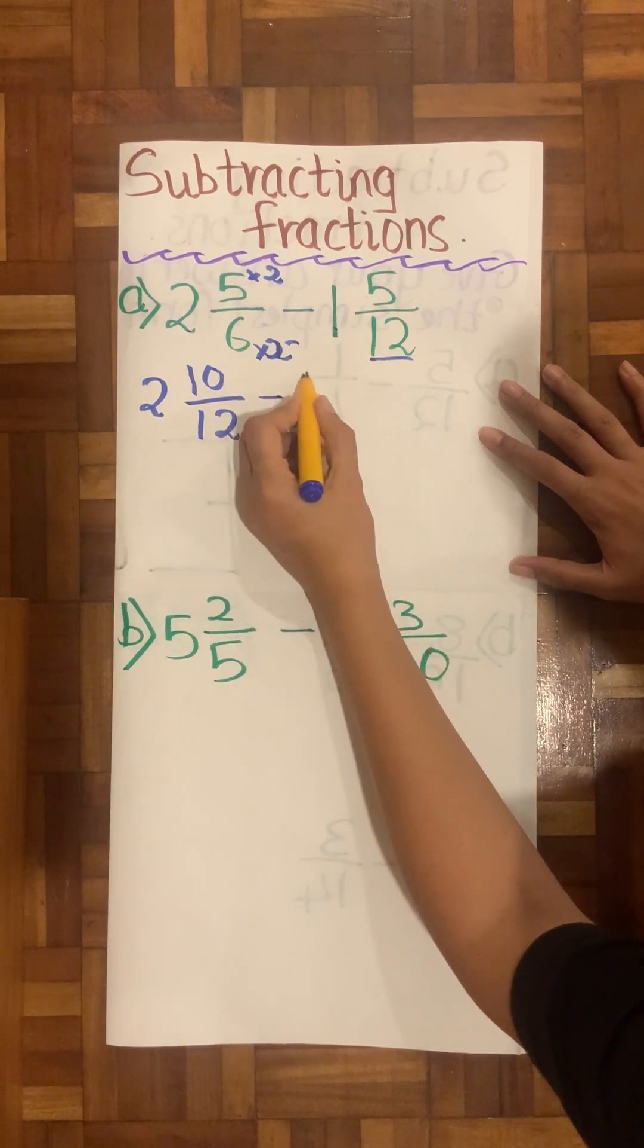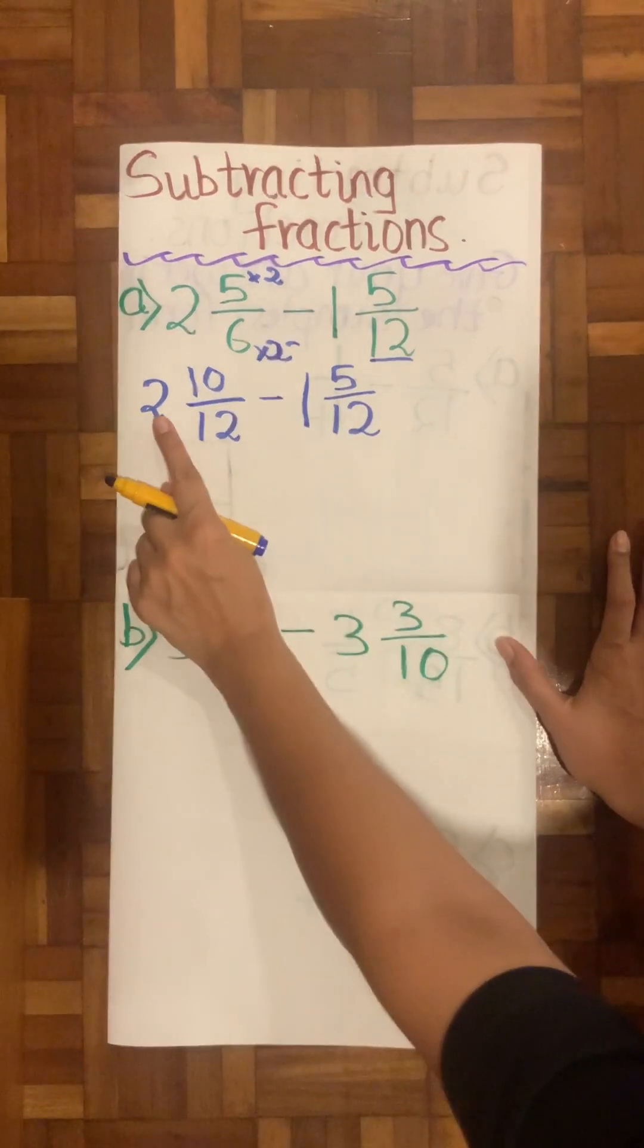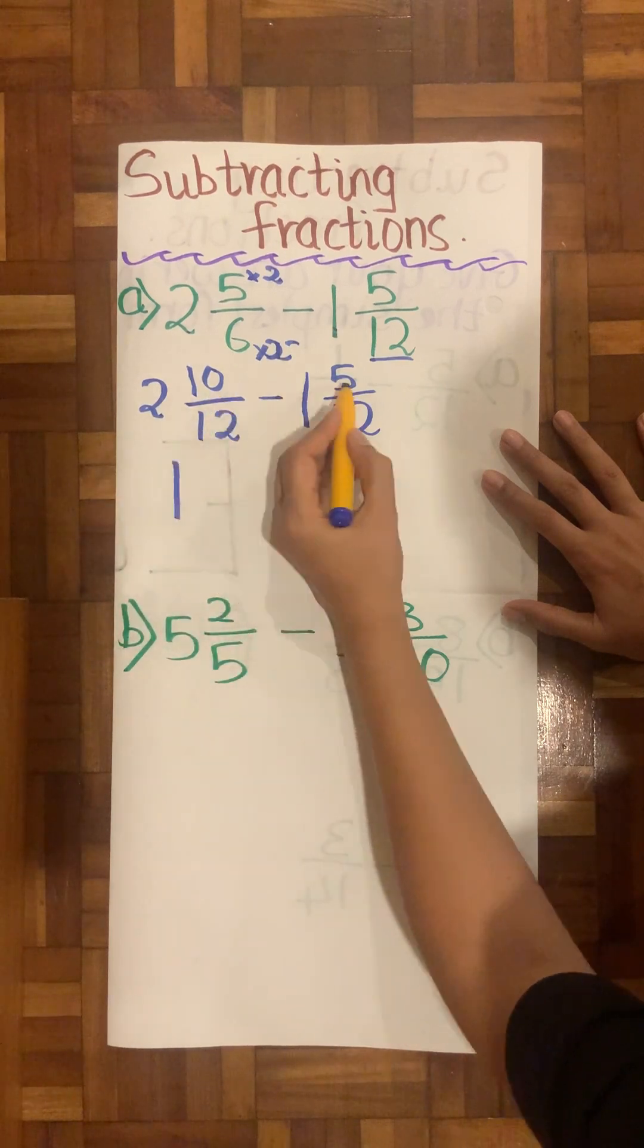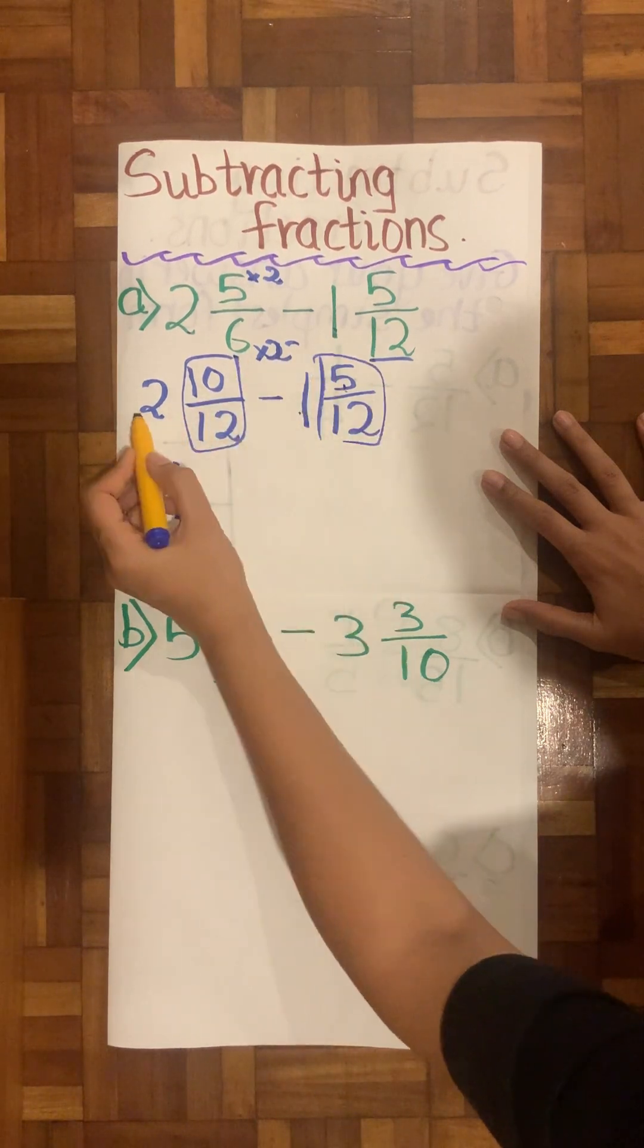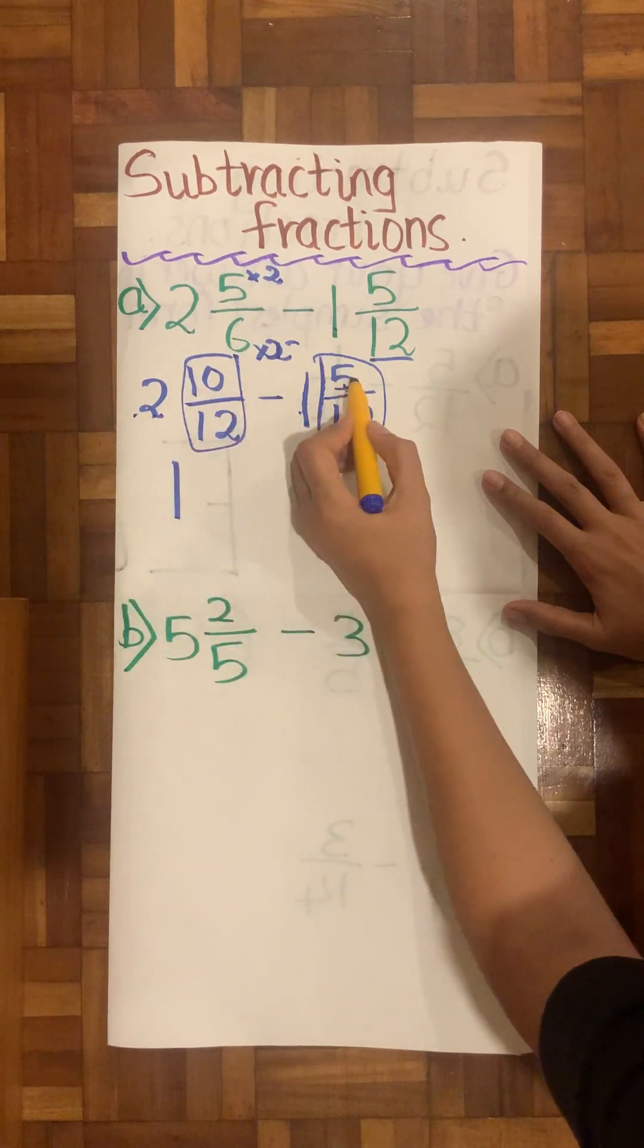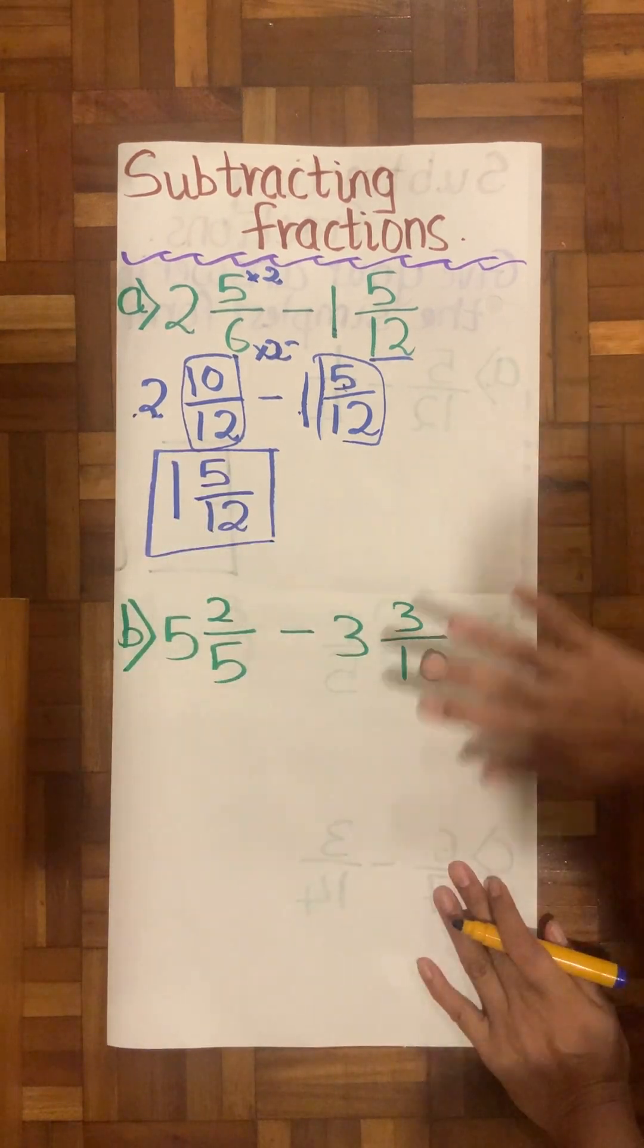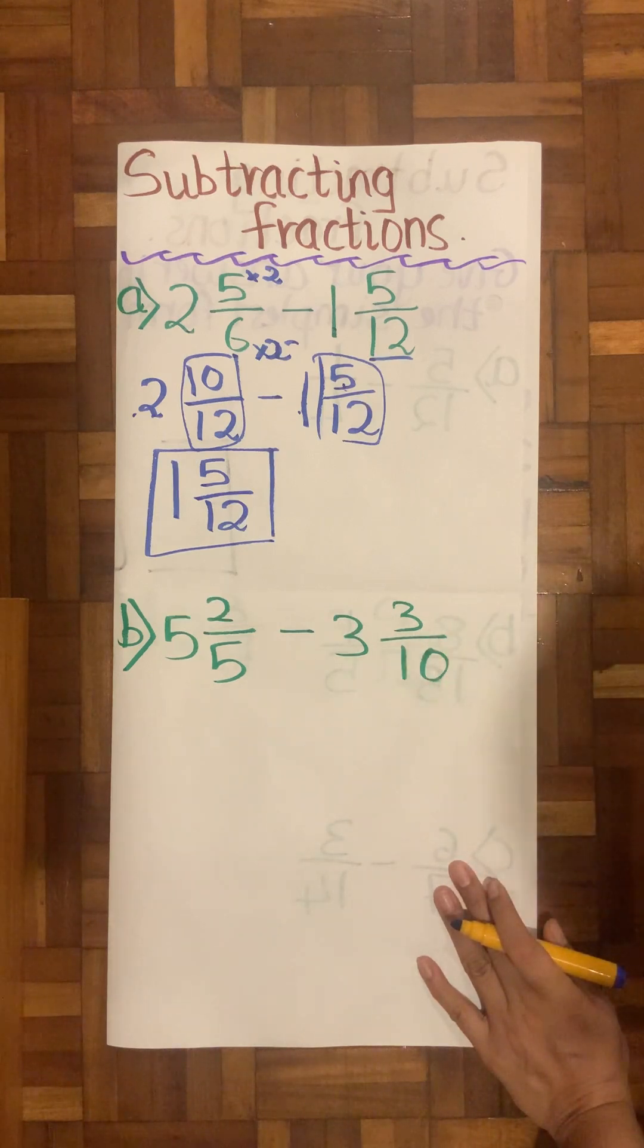So 5 times 2 is 10, 6 times 2 is 12, minus 1 whole ⁵⁄₁₂. Now I'm going to individually see my 2 wholes and 1 wholes. So 2 minus 1 is 1. 10 minus 5, now I'm looking at the fraction. First I dealt with only wholes because I'm subtracting. 10 minus 5 is 5 and my 12th. So this is how I can subtract in another shortcut way.